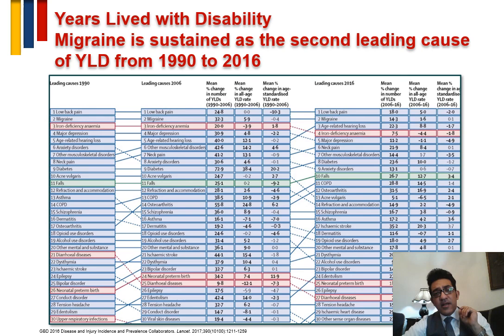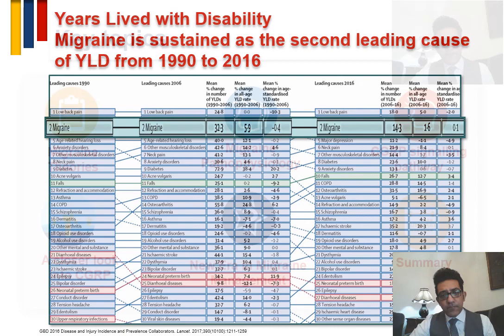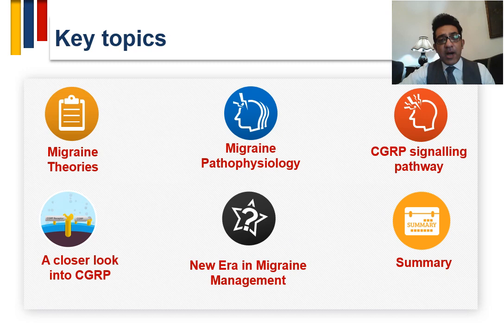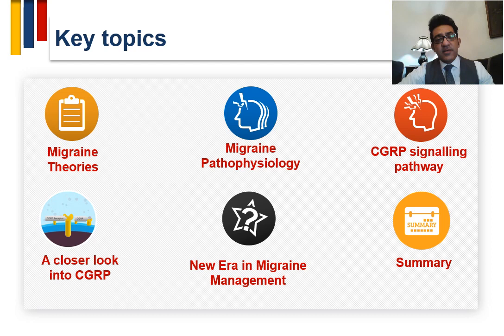Migraine is the second leading cause of years lived with disability according to the Global Burden of Disease. The key topics I will cover today are: migraine theories, migraine pathophysiology, CGRP signaling pathways, a closer look into the CGRP with the new era in migraine management, the unmet needs in migraine management, and finally the summary and conclusion.